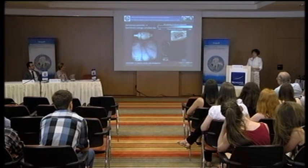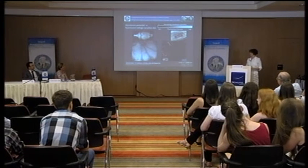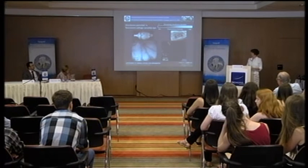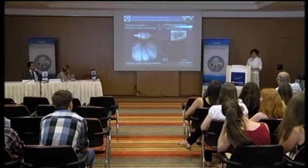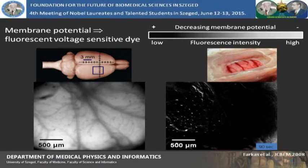We have a unique tool in our laboratory, which is an imaging tool. This tool was developed by us, and therefore it is unique all over the world. We can visualize changes in membrane potential in the cortex of the rat by using a fluorescent dye.